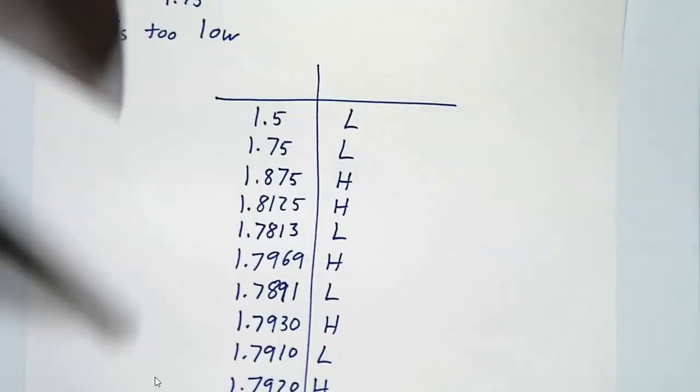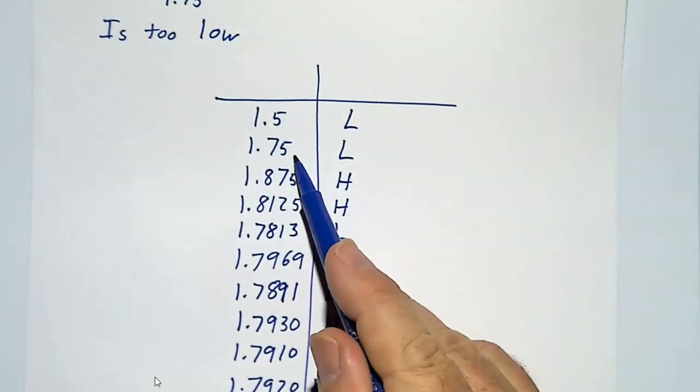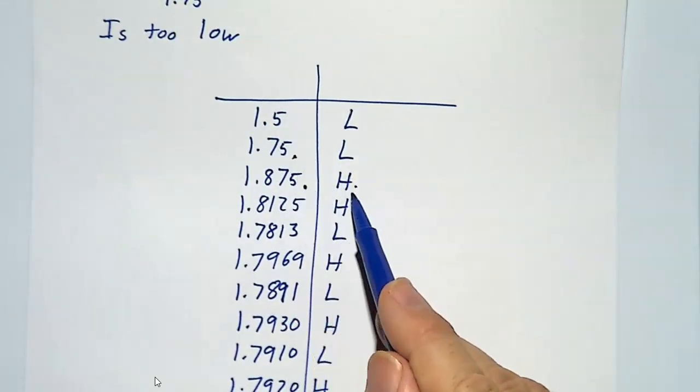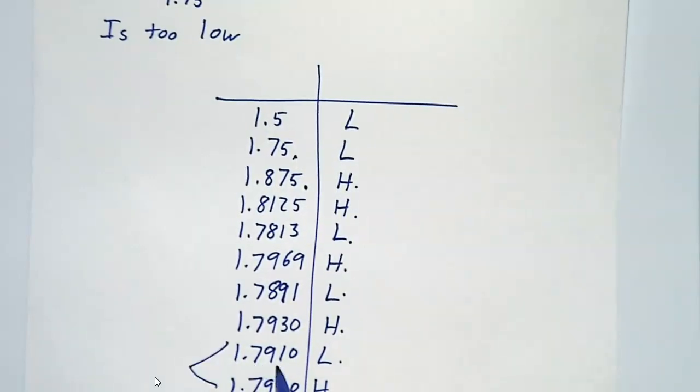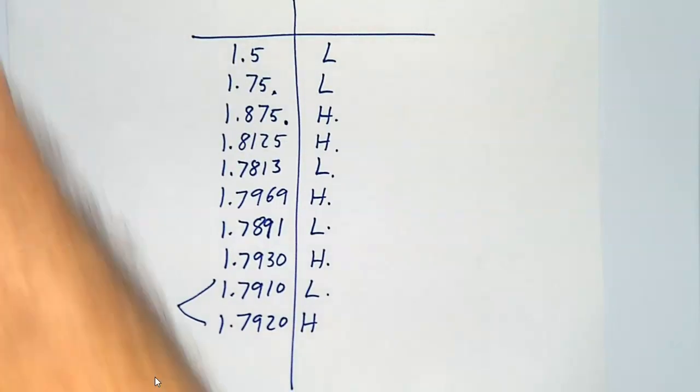And here we go. So 1.5 is too low, 1.75 is too low, 1.875 is too high, too high, too low, too high, too low, too high. And in the end, we've got that it's somewhere between 1.7910 and 1.7920.